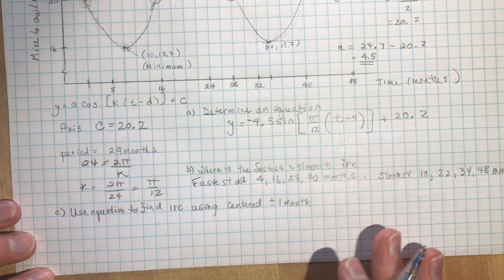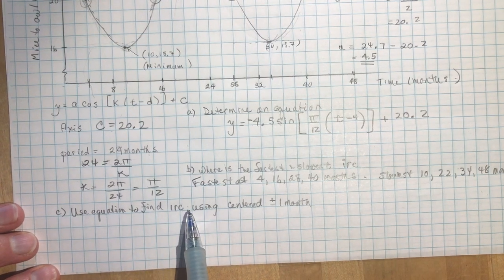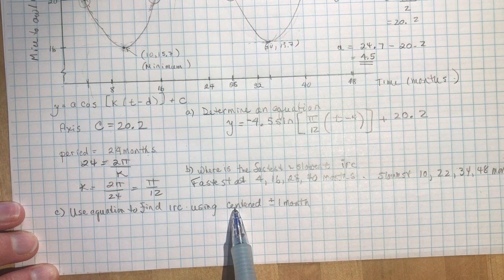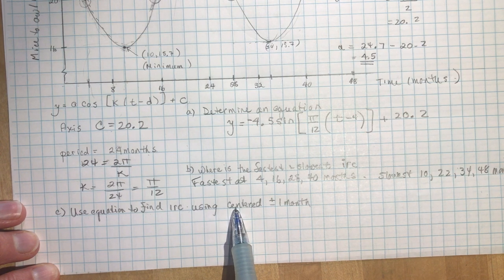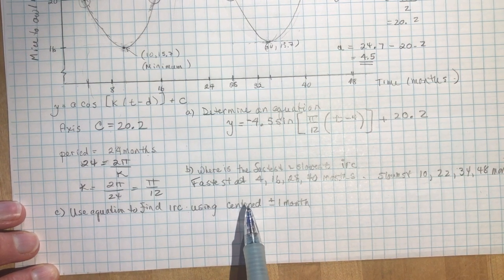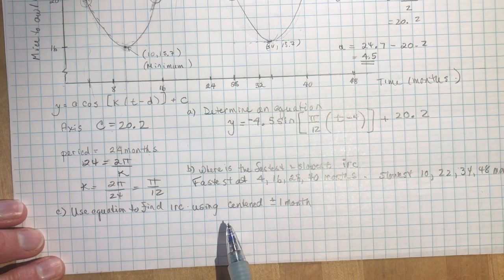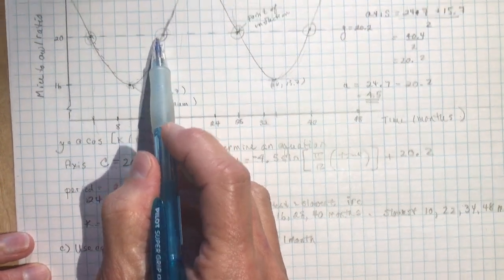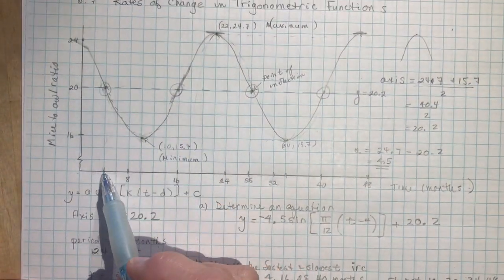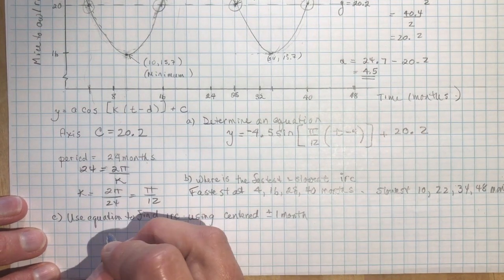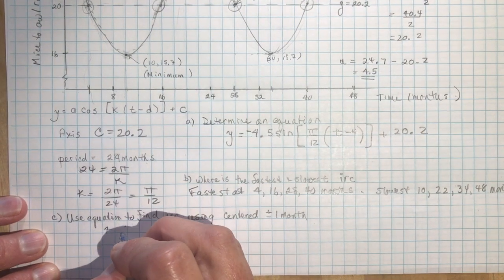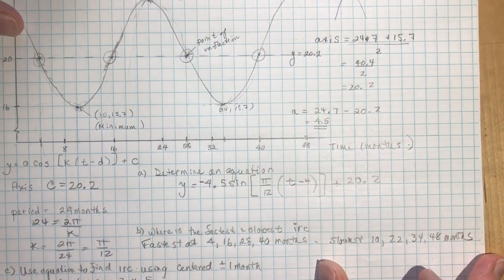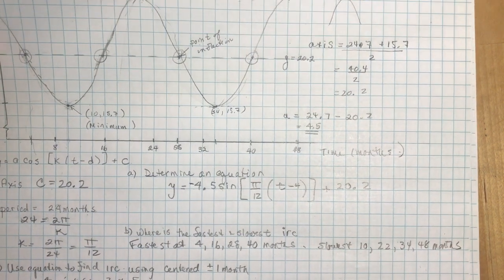Okay, and now it says use an equation to find the instantaneous rate of change using a centered interval, use a centered interval of one month before to one month after the time when the instantaneous rate of change is at its maximum. Okay, so the instantaneous rate of change is maximum, either here or here, you can choose which one, I'm going to use at 4, so 4 means I'm going to use, use 3 and 5.